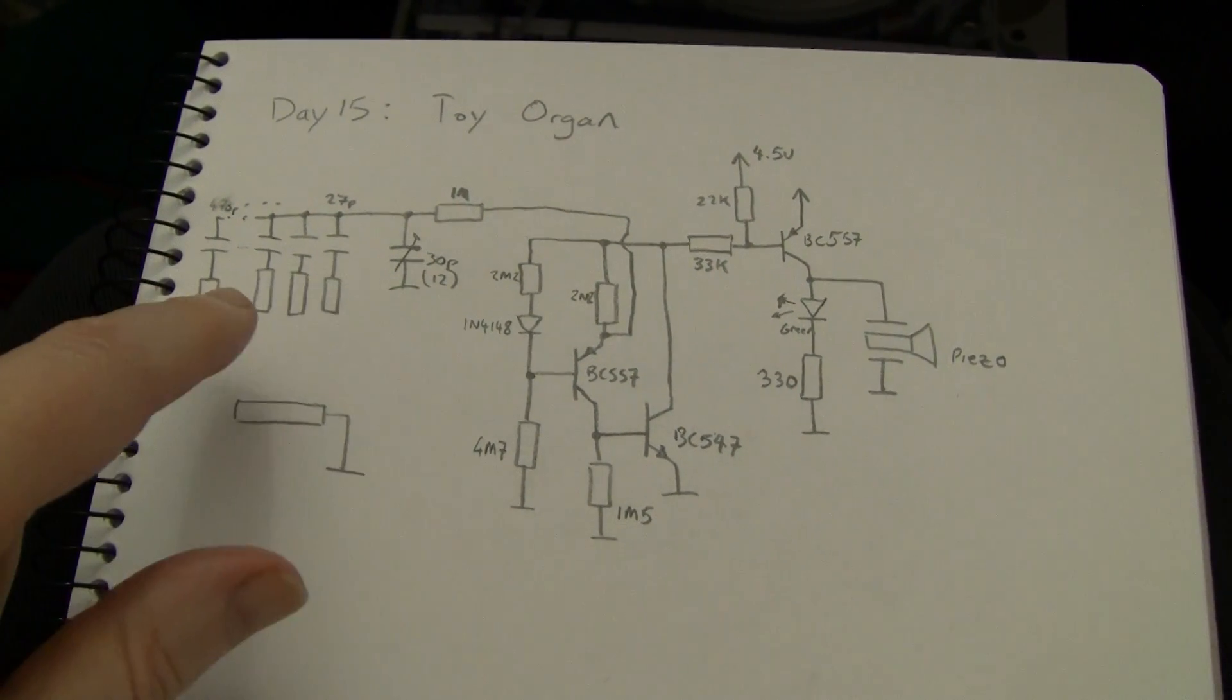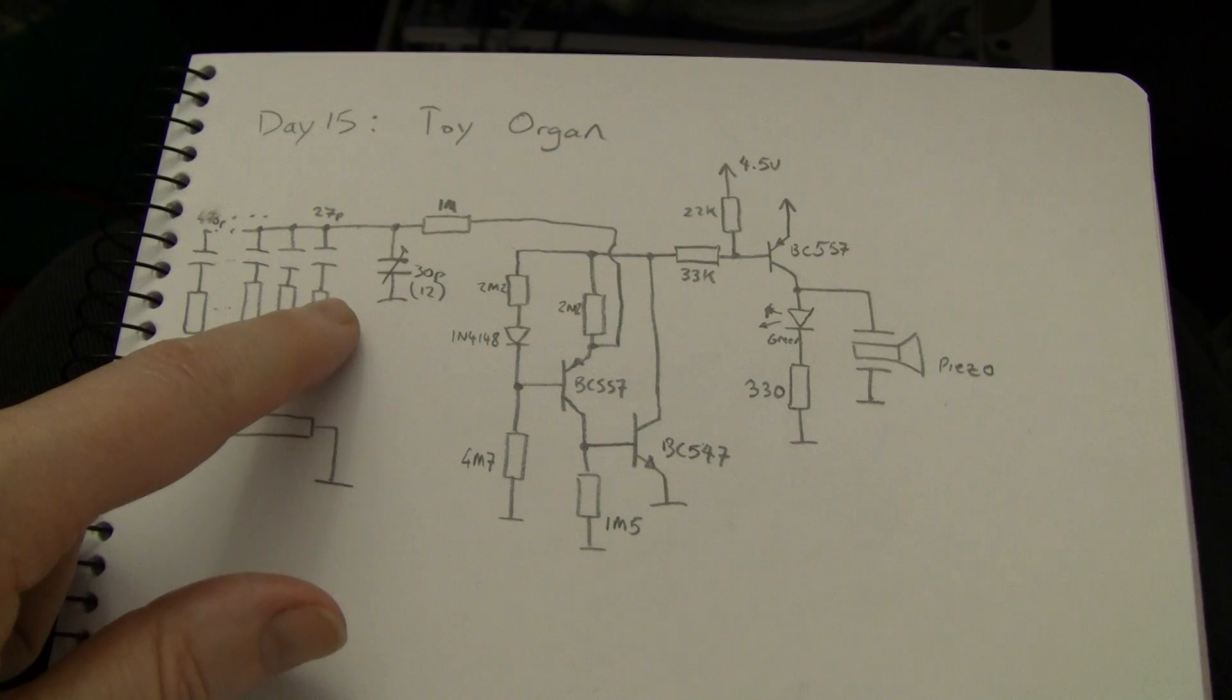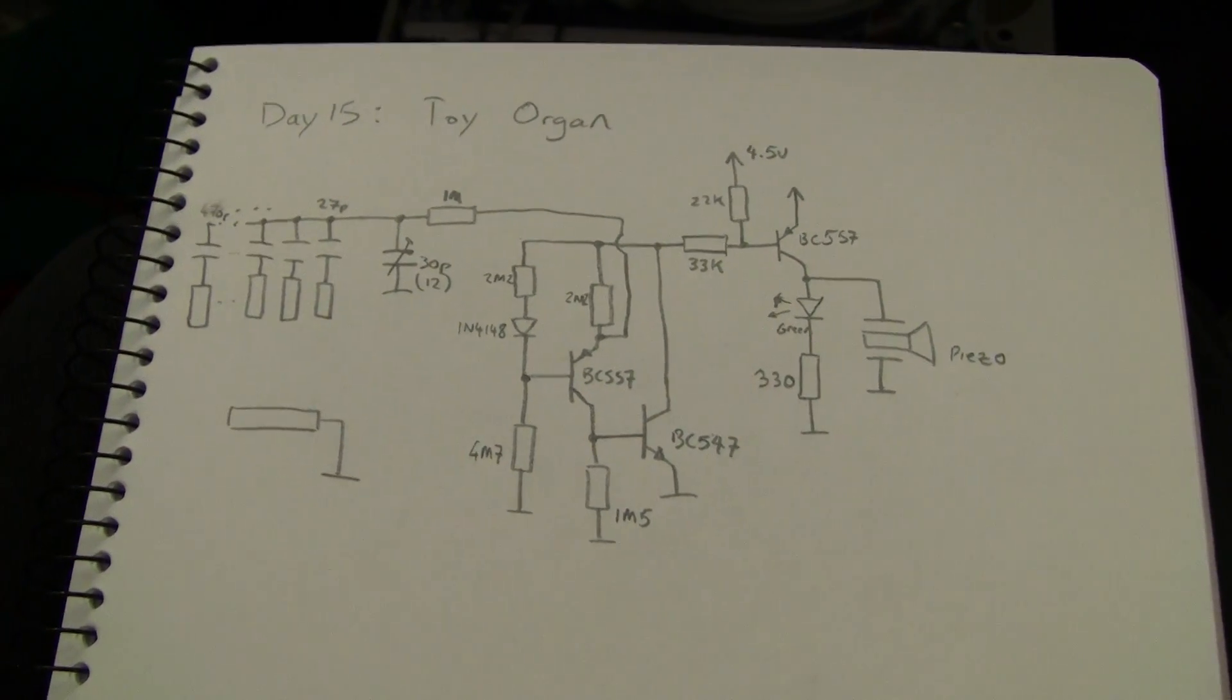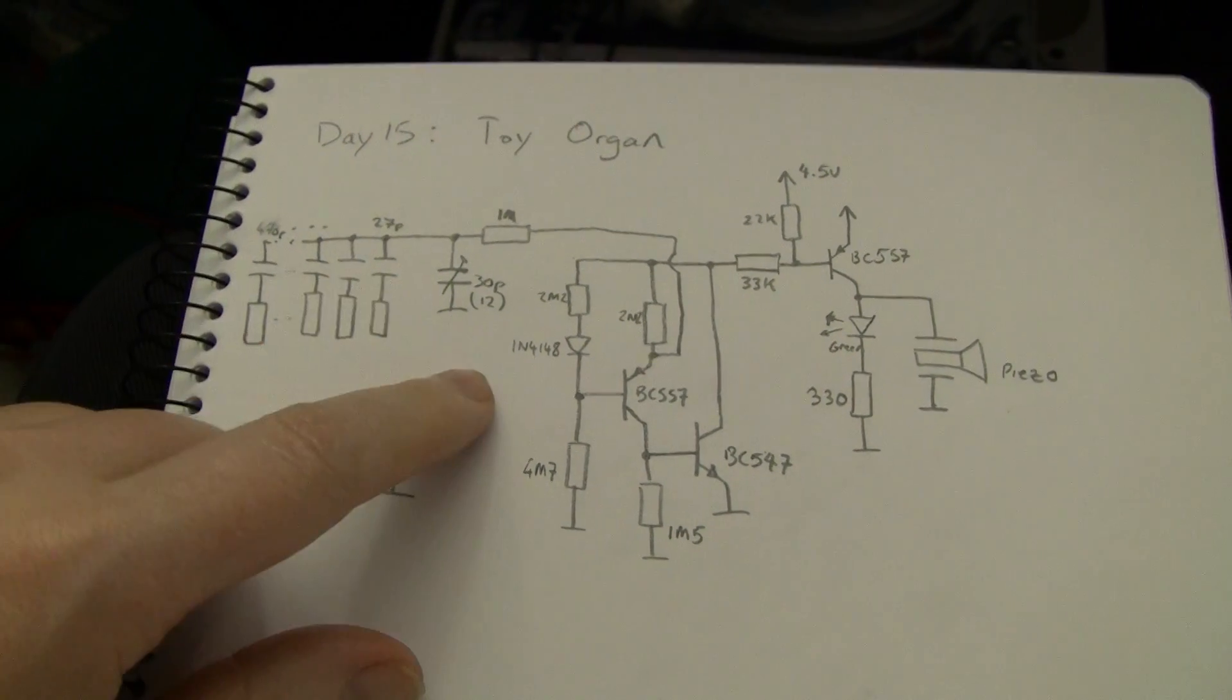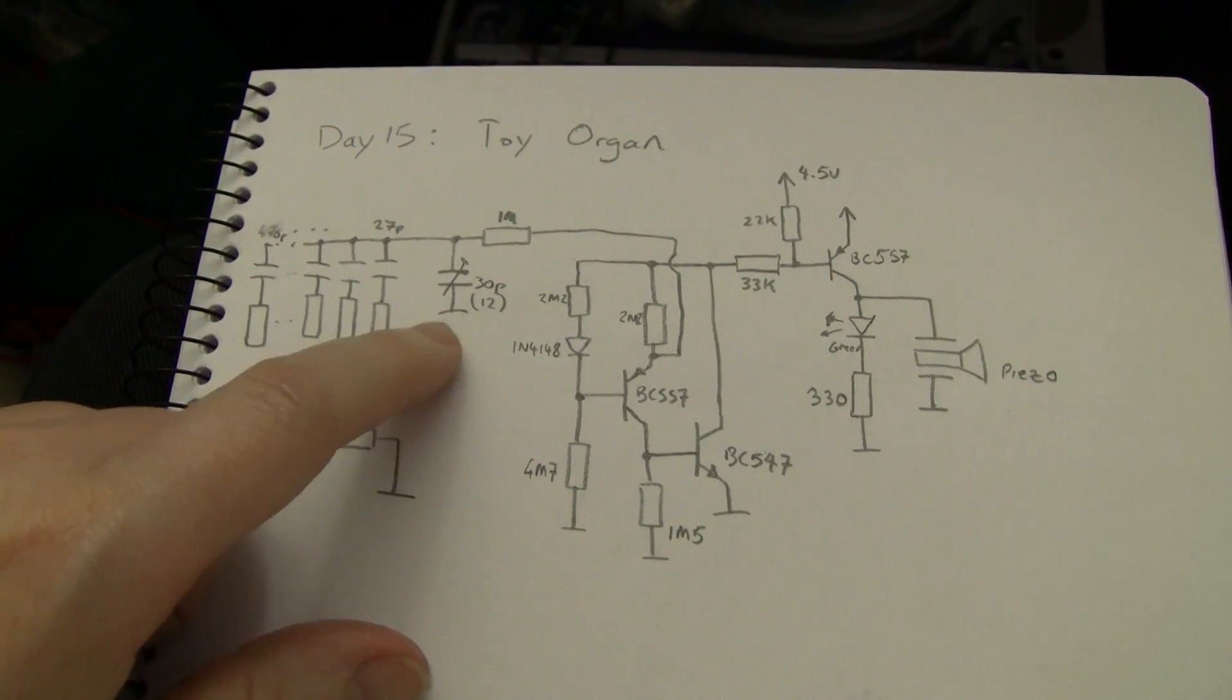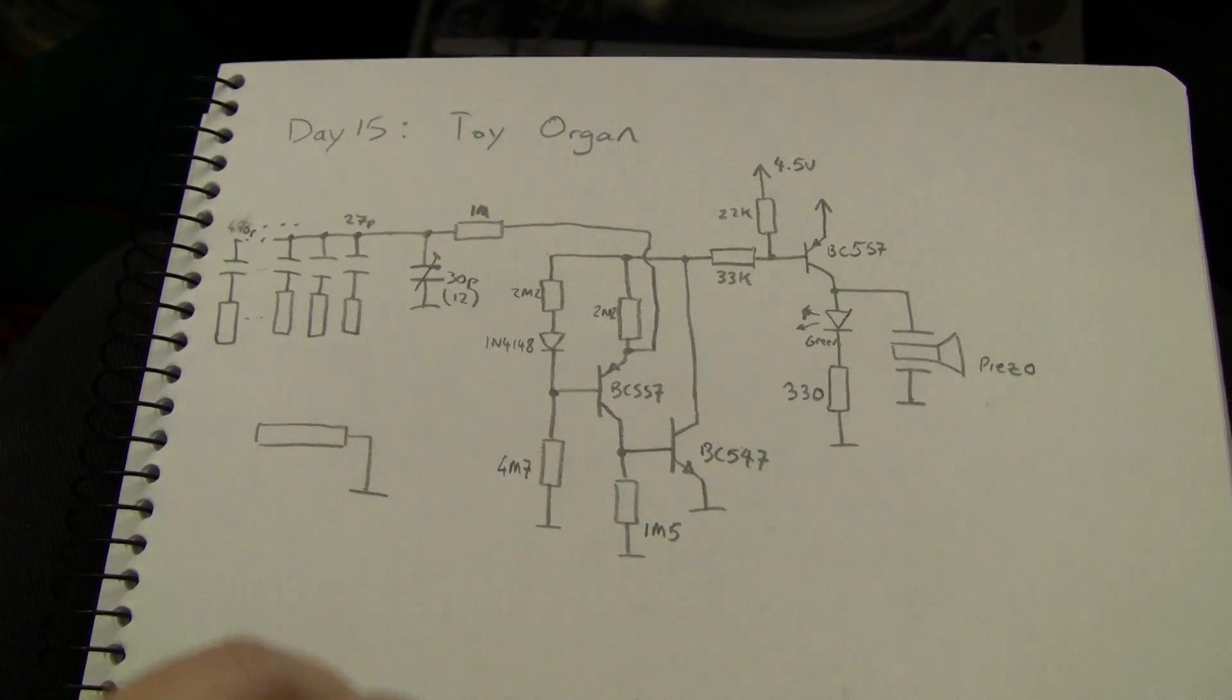So what I did is I arranged a bunch of fixed capacitances in a sequence that produces musical notes or something, approximating them anyway. I had fiddled around with some of the values a little bit, but essentially it's the same circuit.